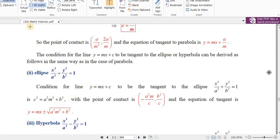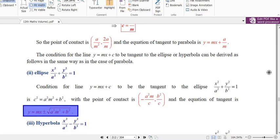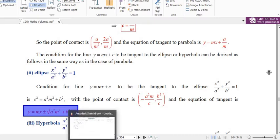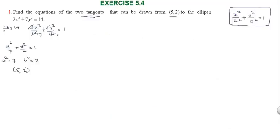When we find the tangent line y = mx + c, the condition for y = mx + c to be tangent to the ellipse gives us the equation of the tangent as y = mx ± √(a²m² + b²).